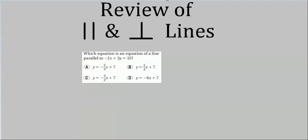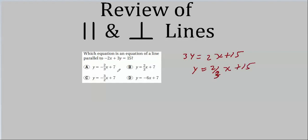Here's another easy multiple choice question: which equation is the equation of a line parallel to a given line? First we find the slope. Rewriting 3y = 2x + 15 gives y = (2/3)x + 5. So we need another equation with slope 2/3. We find one with slope 2/3, and that's the answer — just match the slope and you're done.